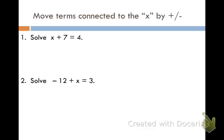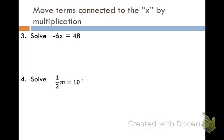Next we're going to look at problems that have something attached using multiplication. So in this first problem, I no longer have x plus or minus a number. I have negative six times x. Remember, whenever you have a number next to a variable, like seven x, that means seven times x. So, the inverse, if I look back at my notes, the inverse of multiplication is division.